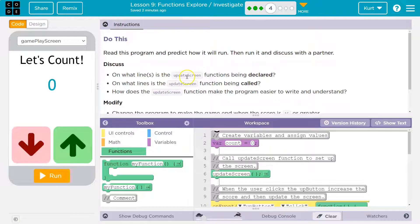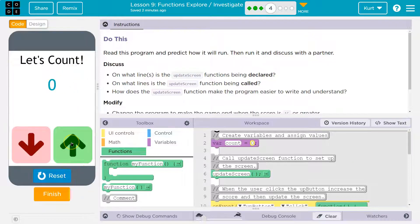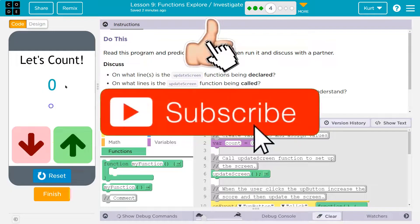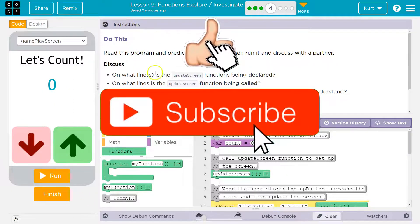Discuss. On what lines is the update screen function being declared? So when is it made? All right, let me run this. Let's count. Okay, boom, boom. Oh, nothing happens. Nothing, nothing, nothing. Okay, well that was fun. That was a fun way to run.